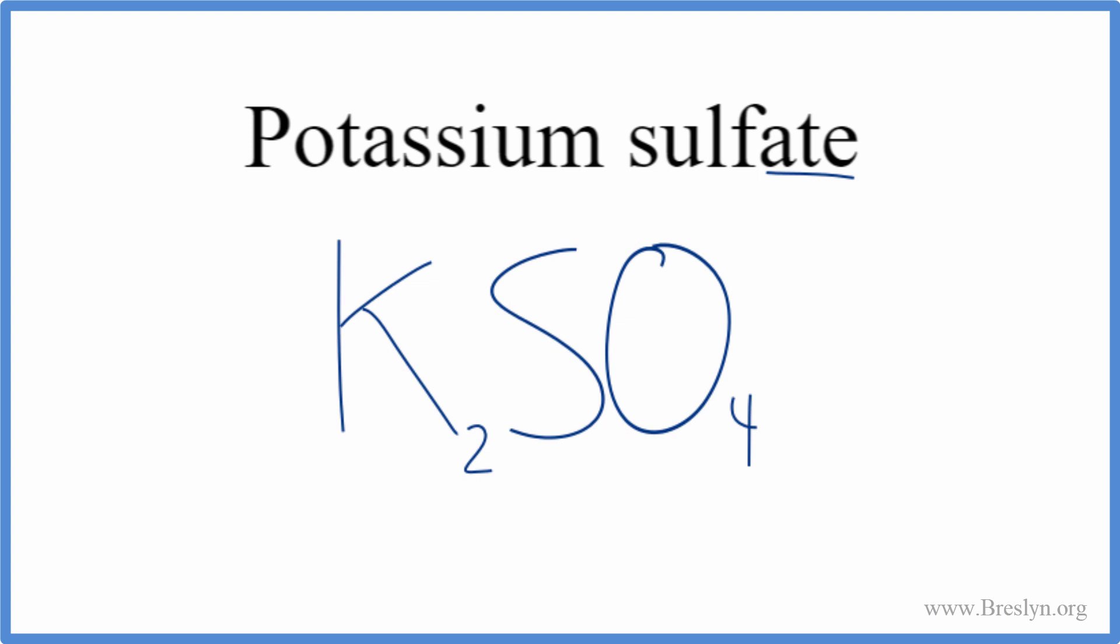We should, however, check our work. We said potassium was 1 plus, and the sulfate was 2 minus. So we have 1 sulfate ion, that's 2 minus, and 2 times the plus 1, we have the 2 potassium atoms. Each one's plus 1.